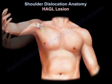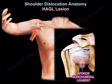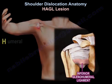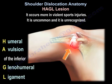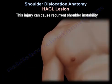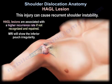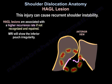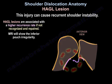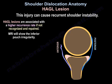How about the HAGL lesion? It is humeral avulsion of the inferior glenohumeral ligament. It is more common in violent sports injury. It is uncommon and often unrecognized, and it can cause recurrent shoulder instability. It is associated with a higher recurrence rate if not recognized and repaired. The MRI will show inferior pouch irregularity.